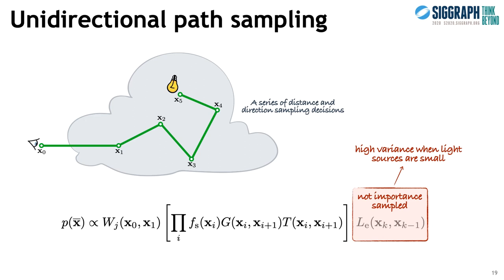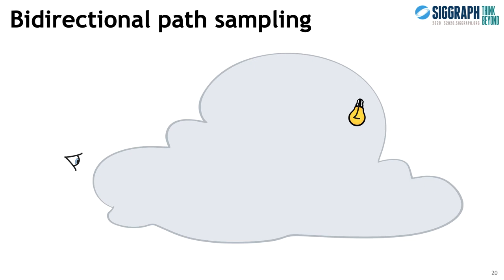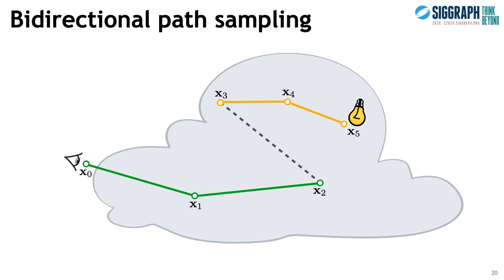We can importance sample the emission by instead starting the sampling at the light source. However, this would require finding the camera via random sampling, which is typically even harder as its sensor is very small. Alternatively, we could start sampling at both ends simultaneously — one path from the camera and one from the light. A complete path is then constructed by connecting their endpoints. With this approach, the same path can be constructed in a number of different ways, depending on the edge along which the connection is performed.